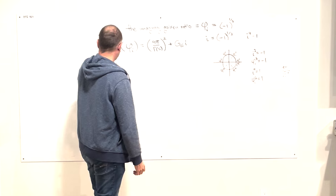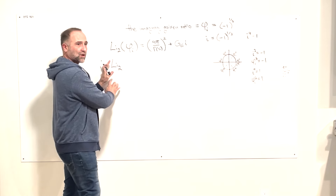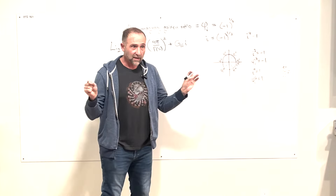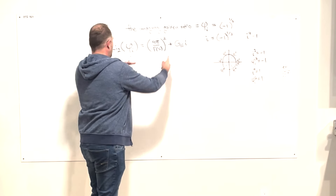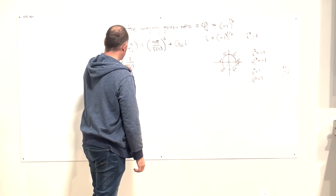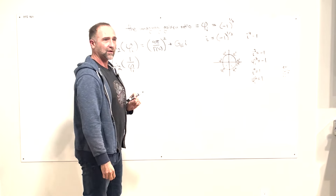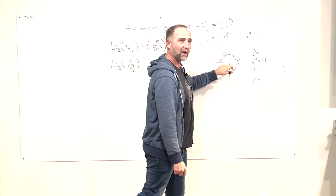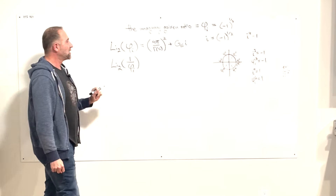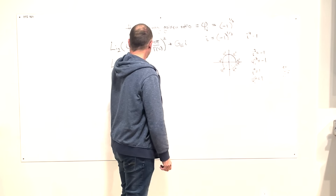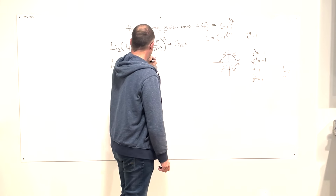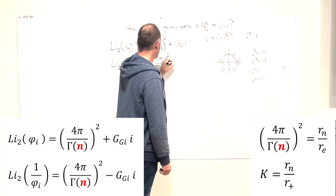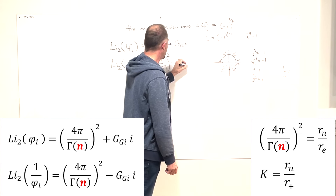Let's take the dilogarithm — a polylogarithm of order two, a two-dimensional logarithm. We're logarithmically constructing things twice in this story. Let's take the inverse imaginary golden ratio, one over φᵢ. It turns out to equal 4π over Γ(5) squared minus GGI·π·i.